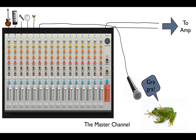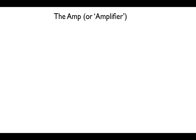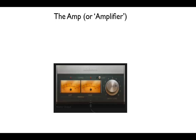Usually they are sent as two different signals — a left signal and a right signal — one for the left speaker and one for the right speaker. Remember that the electrical sound signals inside the mixer are all very tiny and weak. When they leave the mixer, they go to the amplifier. The amplifier, more commonly known as an amp, is where these weak little electrical signals are made much bigger and stronger.